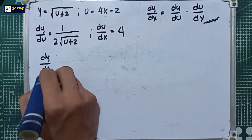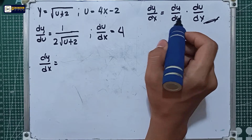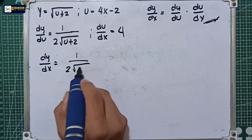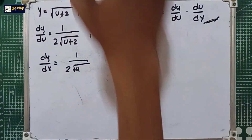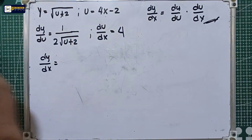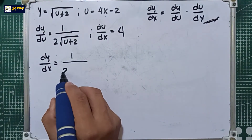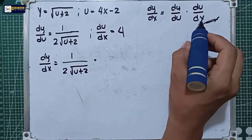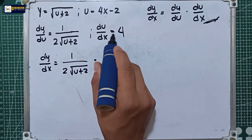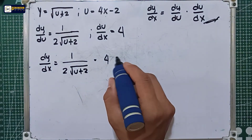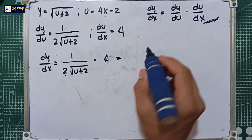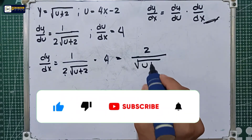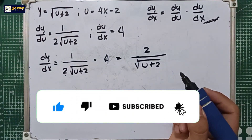Now for the chain rule step, we apply the formula: dy over dx equals dy over du times du over dx. So that is 1 over 2 times the square root of u plus 2, multiplied by 4. Simplifying, 4 divided by 2 is 2, giving us 2 over the square root of u plus 2.